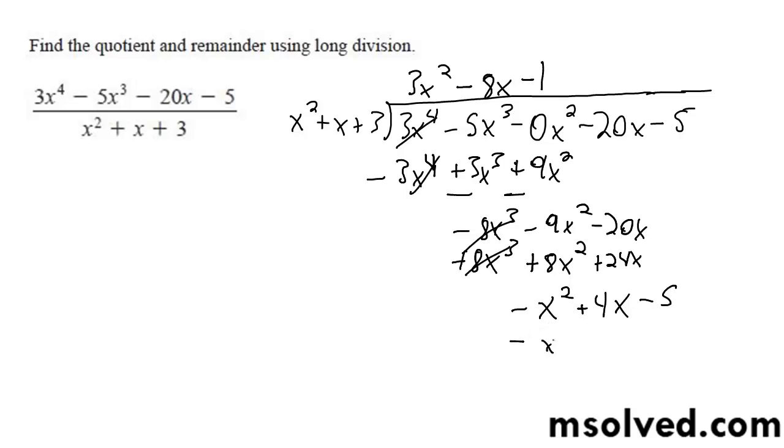Okay, negative x squared, minus x, minus 3, switch signs. Just cancel, and we're left with 5x minus 2.